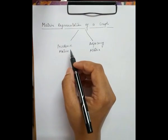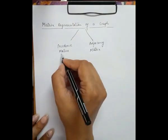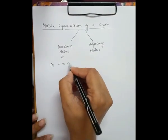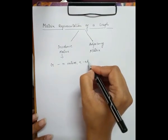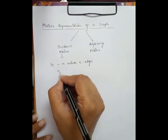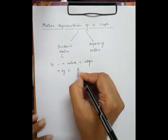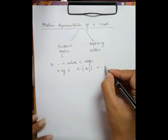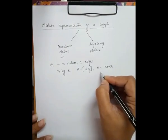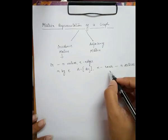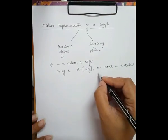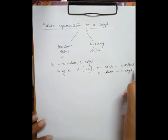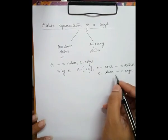For the incidence matrix, suppose G is a graph without any self-loop having n number of vertices and e edges. Then we take an n by e matrix, which we can represent by capital A, equal to a_ij, in which n represents the number of rows corresponding to n vertices — so rows represent the vertices — and e represents the columns corresponding to e edges.